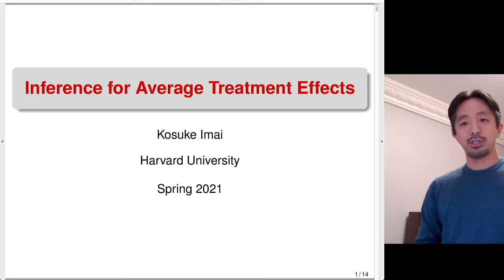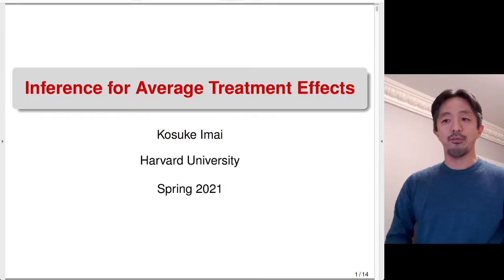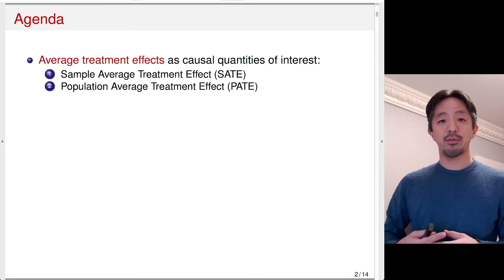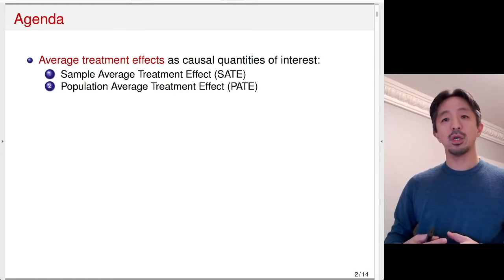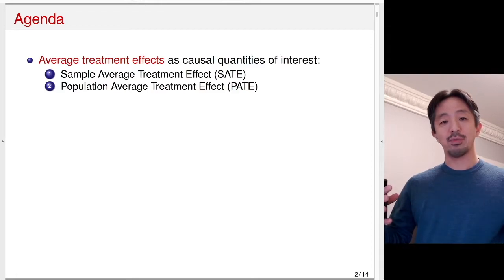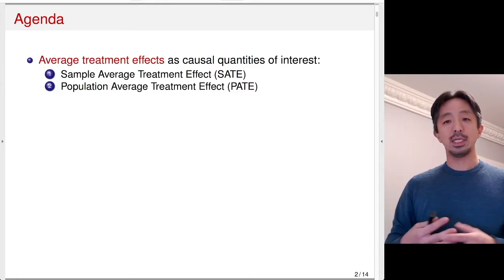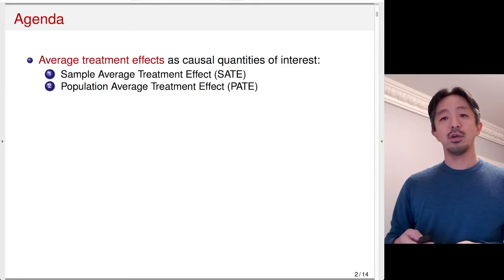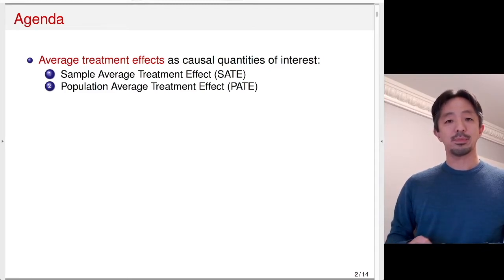Today we'll discuss inference for average treatment effects. The average treatment effects are going to be looked at as a causal quantity of interest. There are two types: the first is the sample average treatment effect (SATE), which is the average treatment effect within the sample; the second is the population average treatment effect (PATE), which is the average treatment effect for the population.